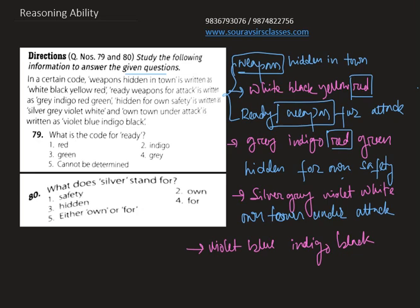Similarly, if we compare 'ready weapons for attack' and 'hidden for own safety,' the common word is 'for.' We then find the common code word between those two coded statements, and the common code word is 'gray.' Therefore, gray is the code word for 'for.'